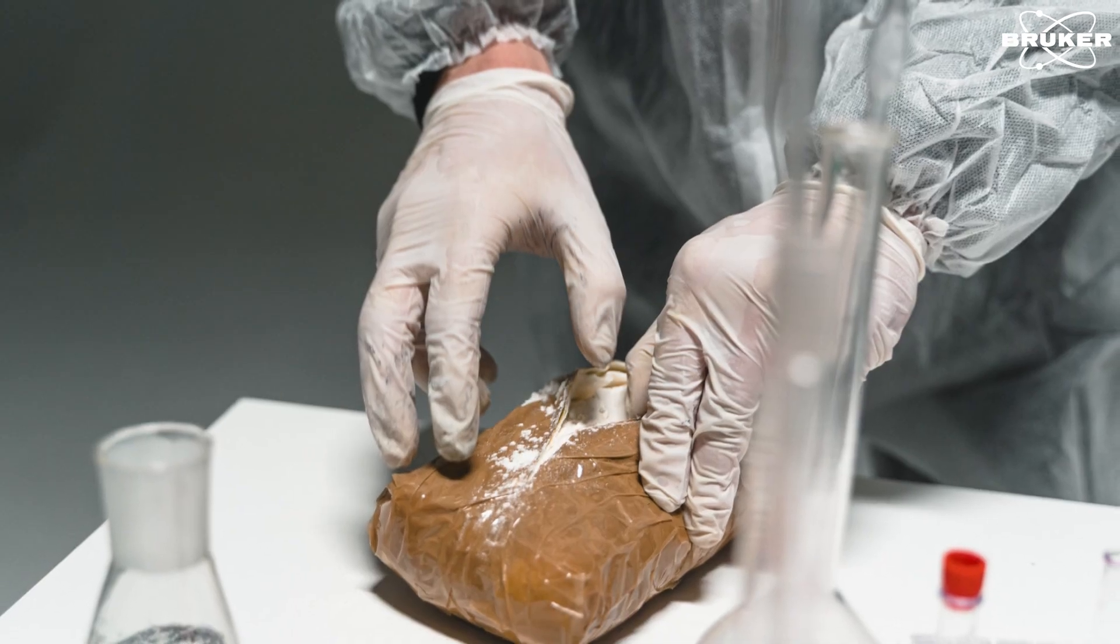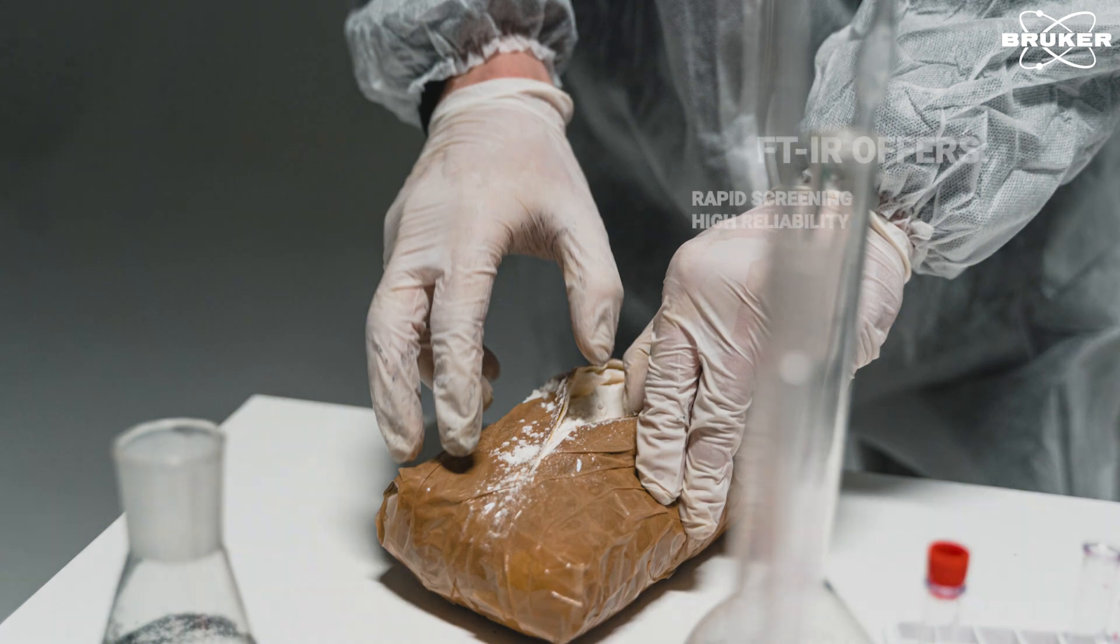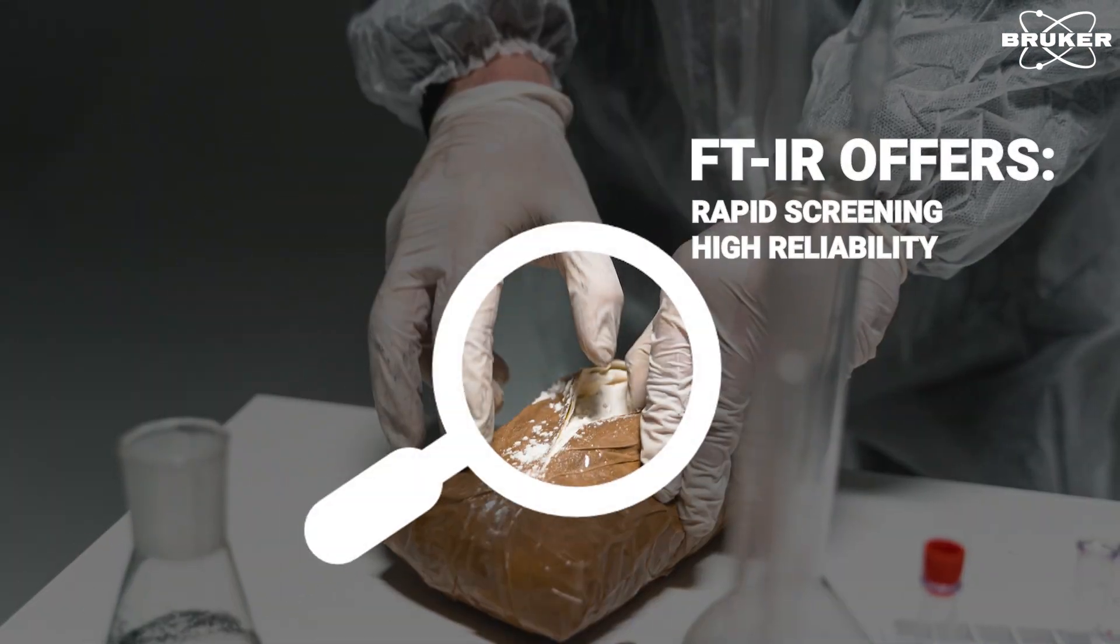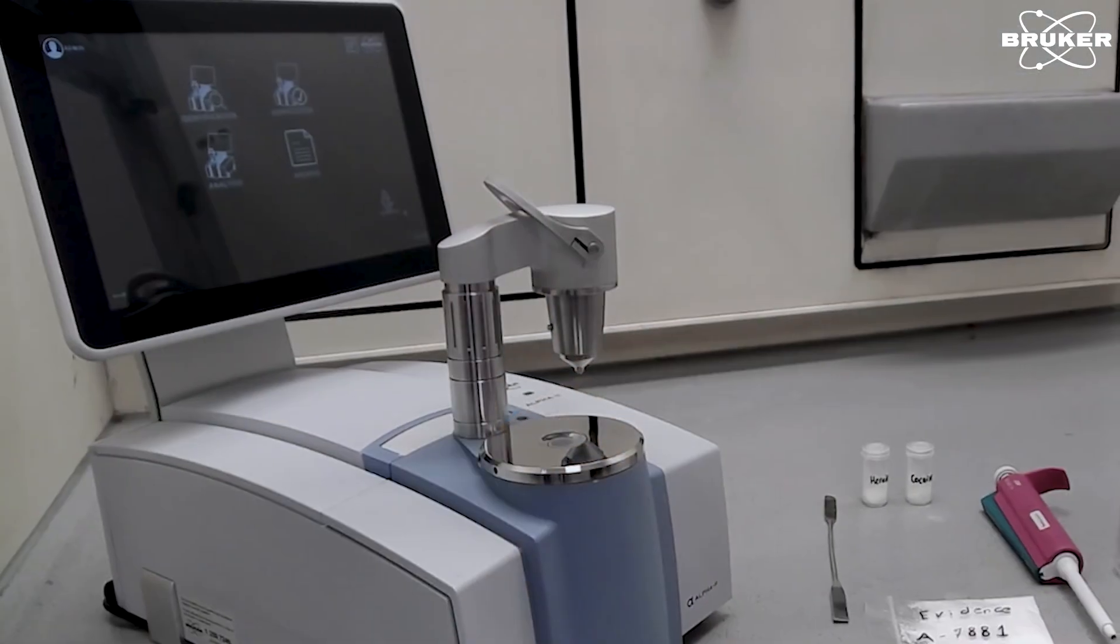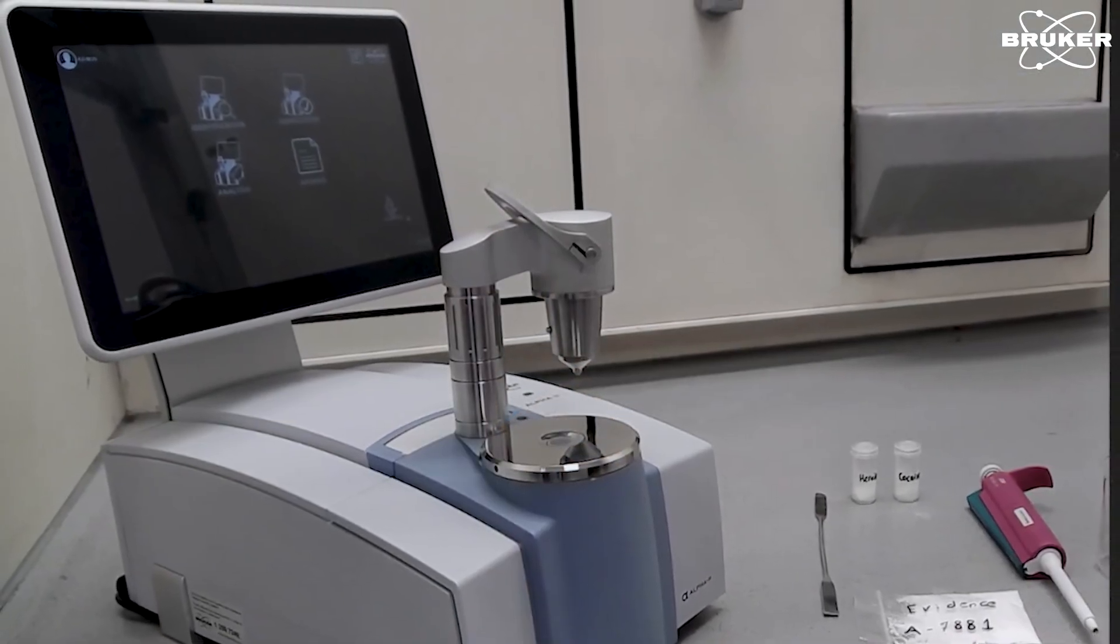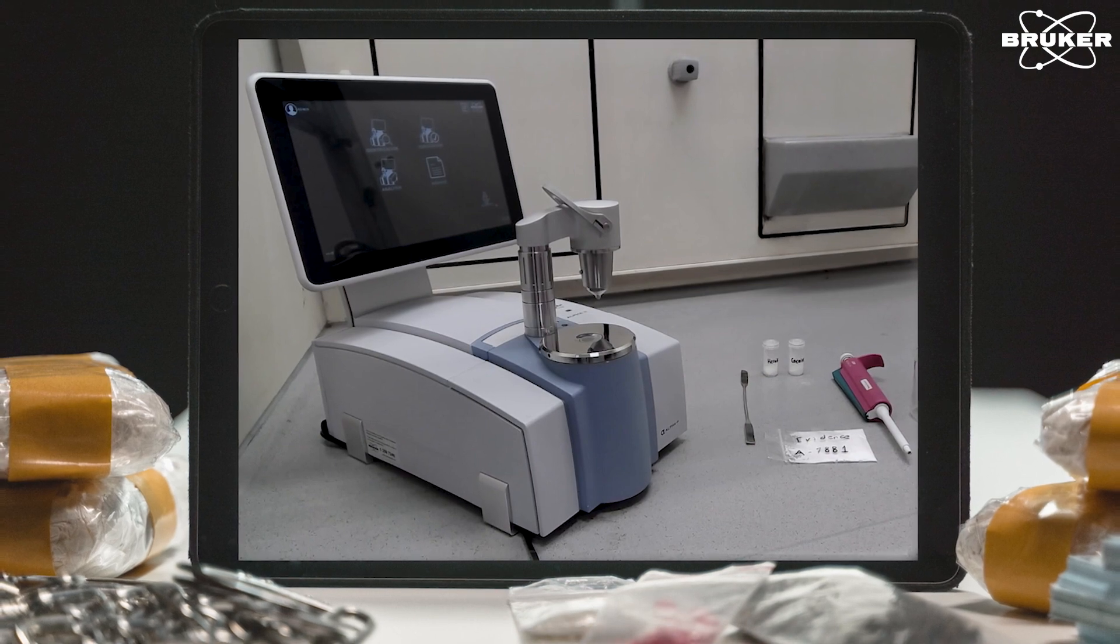In this context, the forensic analysis of illegal substances by FTIR demonstrates rapid screening potential and a high degree of reliability for the identification of evidence using the alpha tube. This, for example, helps law enforcement and forensic scientists to make accurate statements in court.